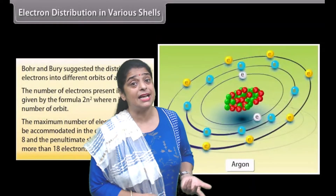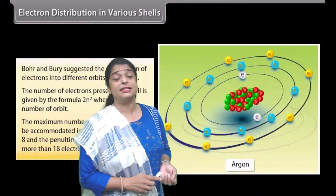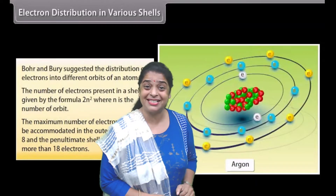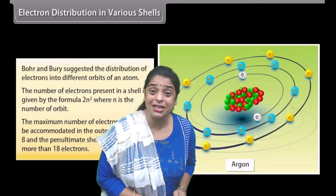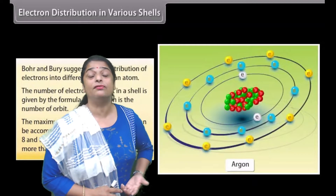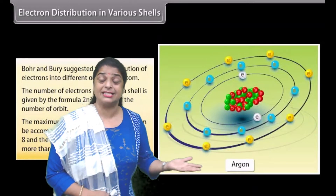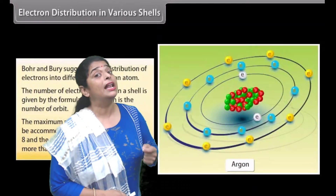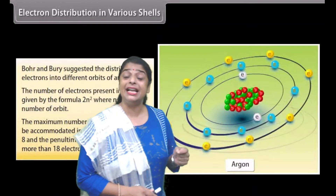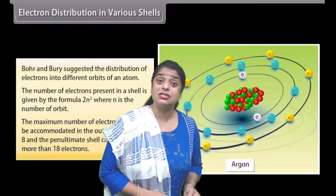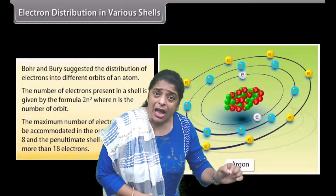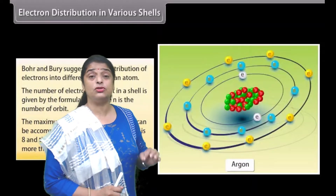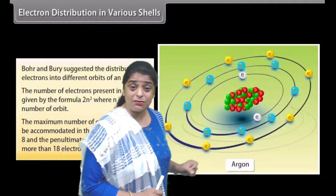Let us see the example of helium. Helium is an element which has two protons and two electrons, with electrons revolving around the nucleus. Another example is sodium. Sodium is an element whose atom consists of 11 protons and 11 electrons. I will discuss how these electrons are distributed around the nucleus, as we have fixed shells.